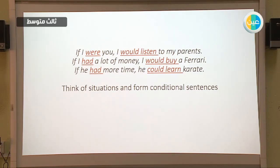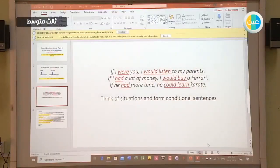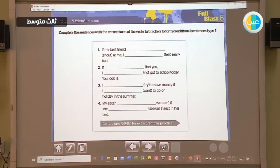Think of a situation at home and use conditional sentence type 2 for something unlikely to happen or an imaginary situation. Let's go back to the task at page 39. We have four sentences. We're going to use the correct form of the verbs in brackets to make them into conditional sentence type 2 form.